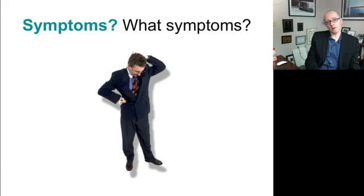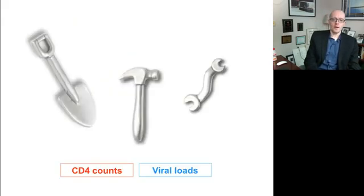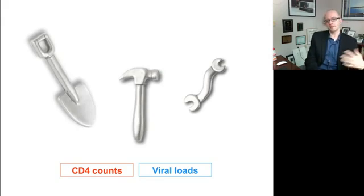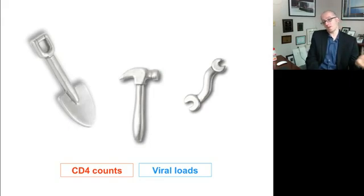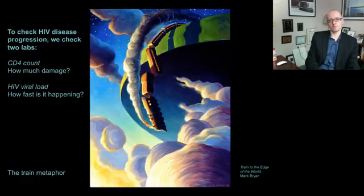Along the way, sort of paradoxically, people typically experience no symptoms. It's often asymptomatic — that's why it's so hard to diagnose, and that's why we have to have a high index of suspicion. So how do clinicians figure out where somebody is in the course of their HIV disease — is it early, is it late, do they have massive immune damage? We use two things: CD4 counts and HIV viral loads.